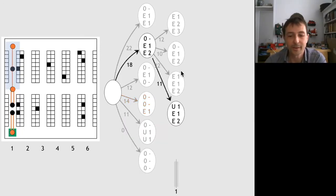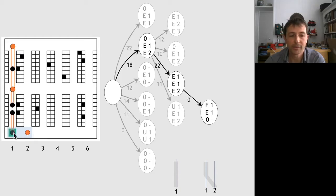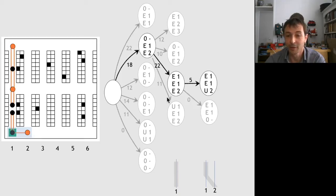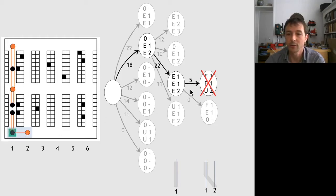Let's continue the example. We extend this subtour with horizontal transitions. Adding nothing, we use this separator and reach vertex E1, E1, 0. Adding one single edge is not possible because it would give an uneven degree here, so we can immediately eliminate that vertex from the graph.